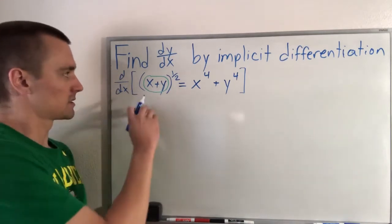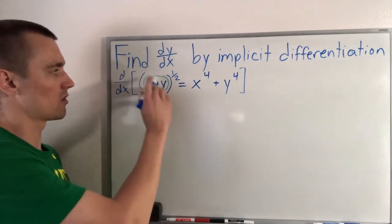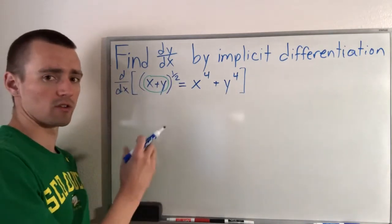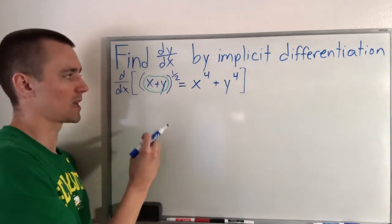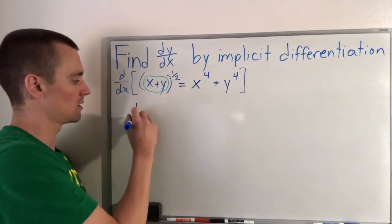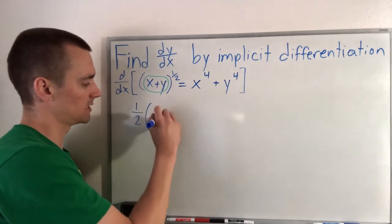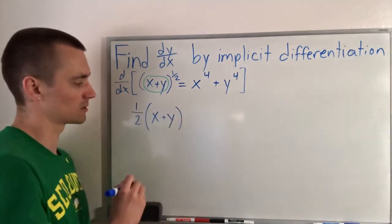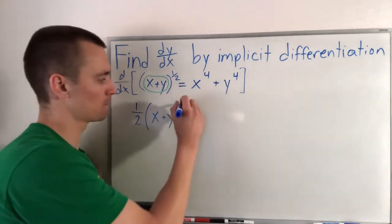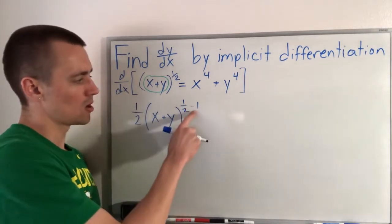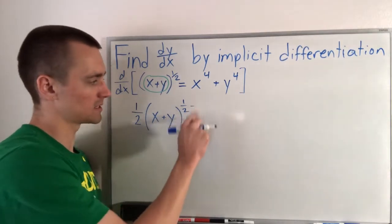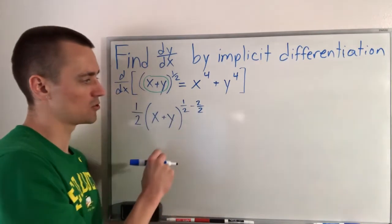So we're taking the derivative with respect to x, which means we're going to take the derivative of our outside, which is just raising everything to the one-half power. When you're taking the derivative of something to a power, you can use the power rule. The power rule says we'll bring our power down in front, leave the inside alone — so x plus y is going to stay x plus y — and then lower our power by one. So one-half minus one is going to be our new power. To do this, we just need to get a common denominator: one is the same as two over two, so one minus two gives us negative one, meaning the power becomes negative one-half.